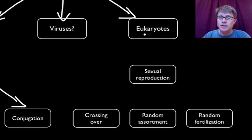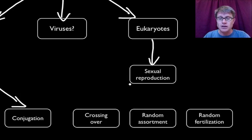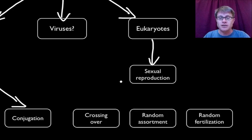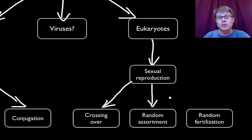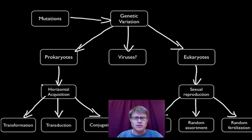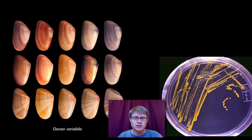In eukaryotes they use sex, so sexual reproduction is the way we maintain genetic variation. Charles II of Spain could have avoided his problems if his parents had been marrying outside the family. Sexual reproduction maintains variation in three ways — that's what makes you special: crossing over during meiosis, random or independent assortment, and random fertilization. Those are the three strategies for maintaining genetic variation in these two different lineages.